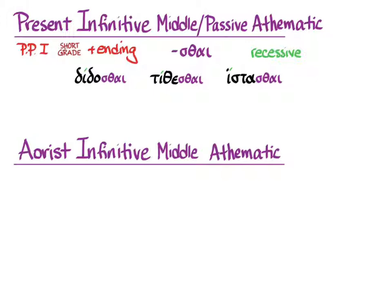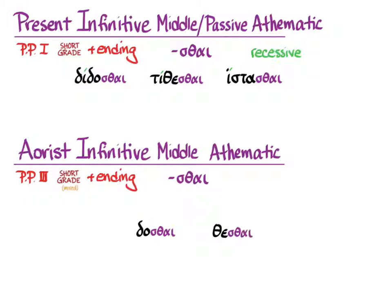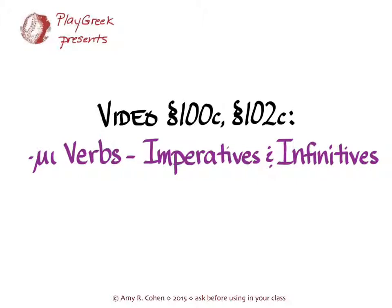When we move on to the aorist infinitive middle for athematic verbs, we use the third principal part, and of course we only do the mixed aorist verbs, δίδωμι and τίθημι. The ending is σθαι again, and with these stems we simply add the ending with recessive accent and get δόσθαι and θέσθαι. There is no special aorist infinitive middle for ἵστημι because the only middle forms come from a regular first aorist, sigma-alpha aorist, ἑστάσα, so we don't need to learn any new forms. And there you have all of the imperatives and infinitives for the unusual forms of μι-verbs.